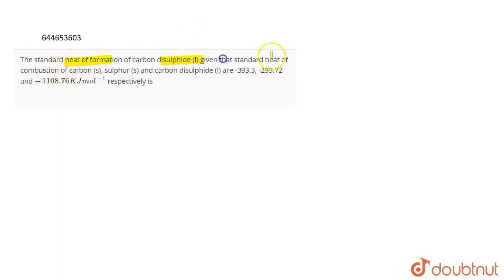Given that the standard heat of combustion for carbon, sulfur, and carbon disulfide are minus 393.5, minus 293.72, and minus 1108.76 kilojoule per mole respectively, you have to find out the standard heat of formation of carbon disulfide.